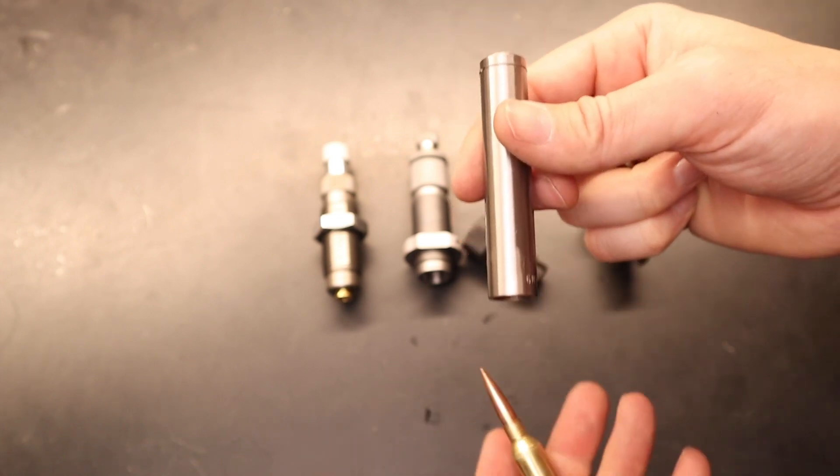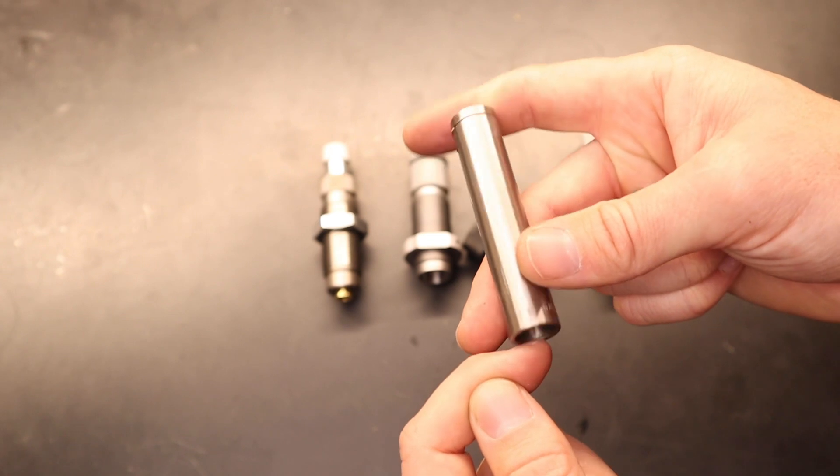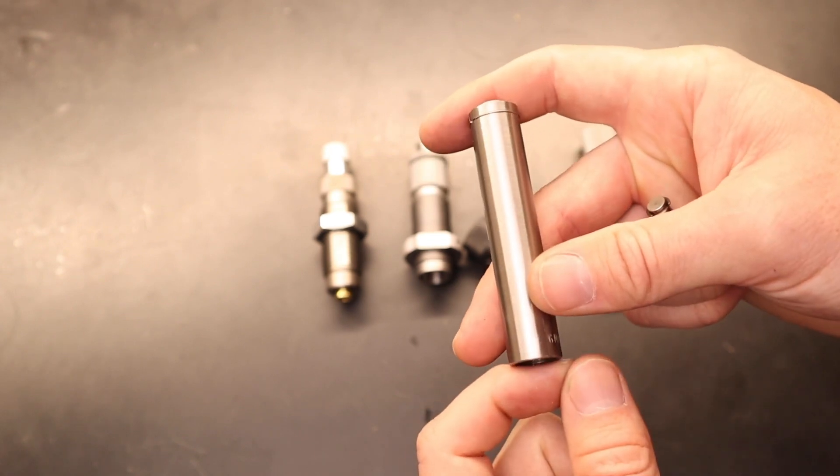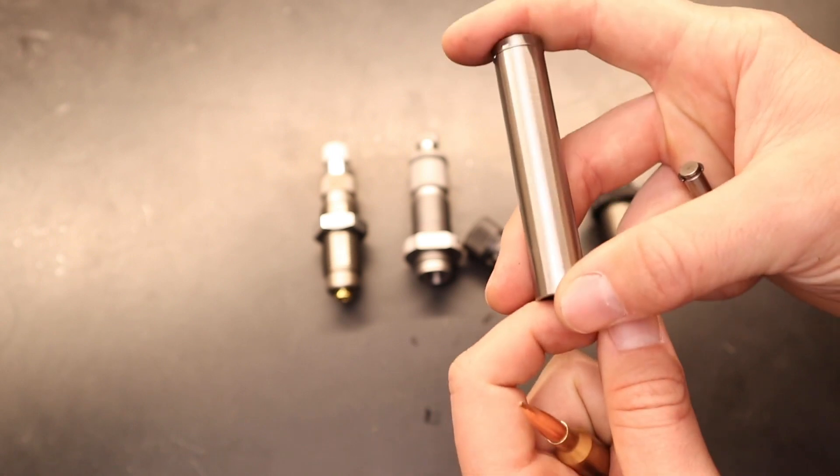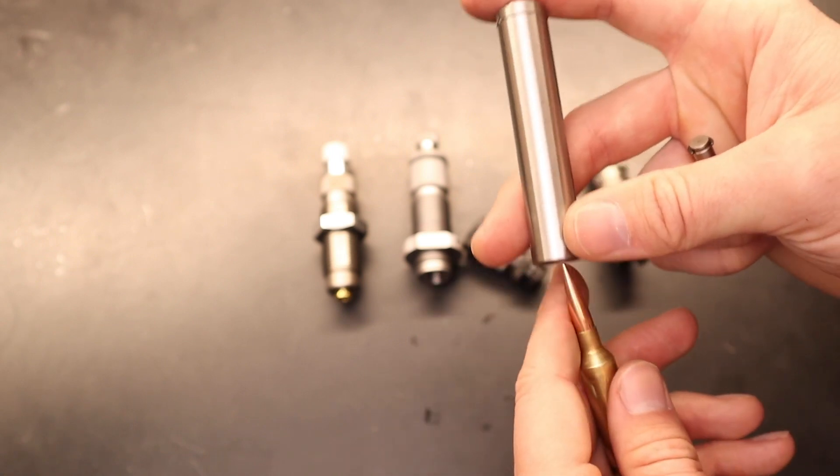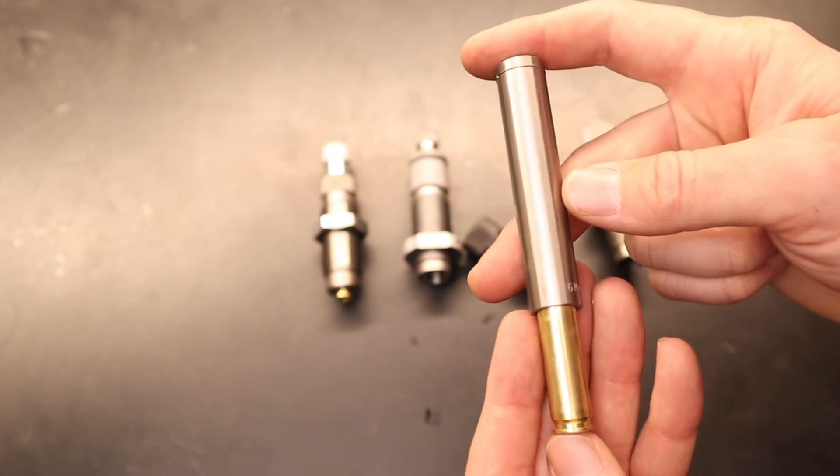So because this is under spring tension, your ram, when you're setting it up on the press, you actually want the top of the stroke to push this up into the die. So there is going to be some spring pressure on the brass as it's getting seated, which is a really good thing.